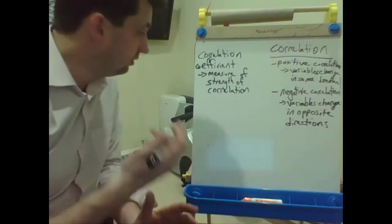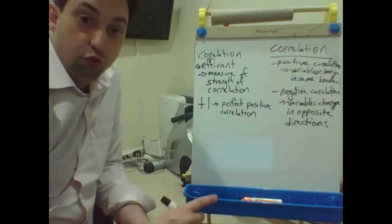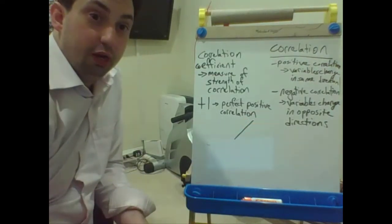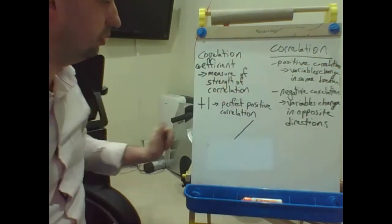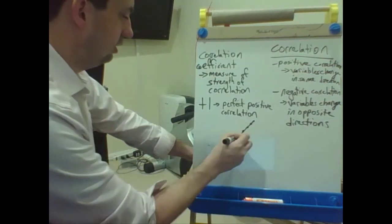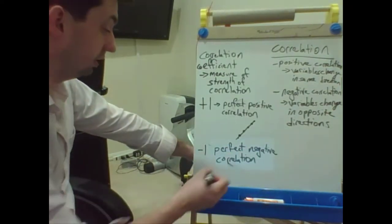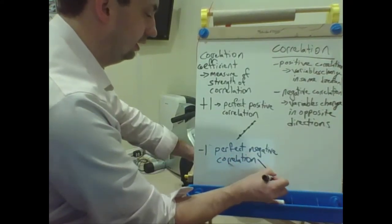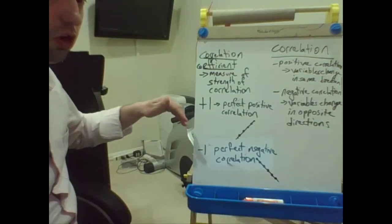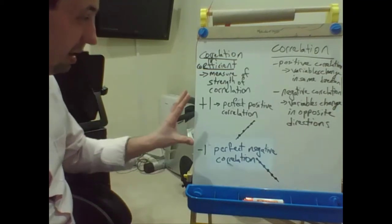The correlation coefficient can be anywhere from positive one, which is a perfect positive correlation — where you could draw an upward sloping line through all the data points hitting every observation — to negative one, a perfect negative correlation, where a straight downward sloping line would hit every observation. The correlation coefficient can never be greater than one and can never be less than negative one. It's always bounded between these.